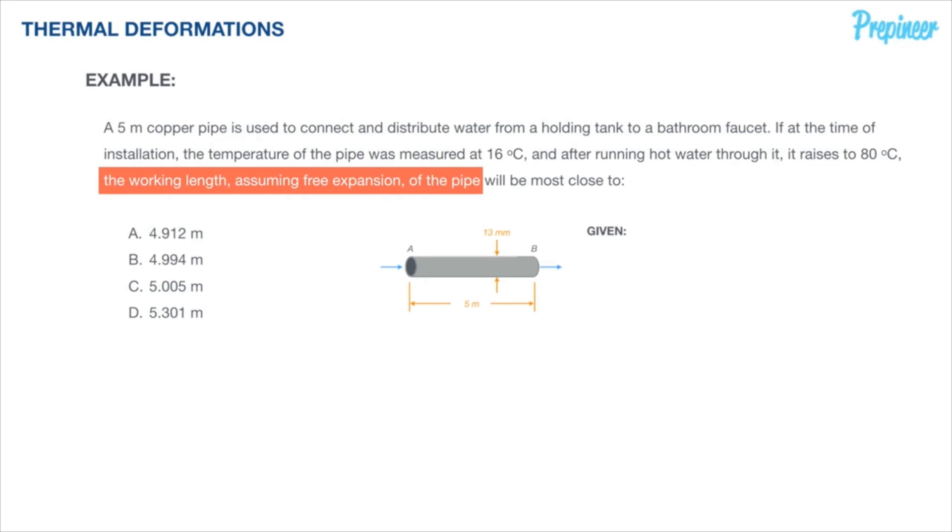Let's scratch out what we are given. We know that the length of our copper pipe is five meters originally. We know that the original temperature at the time of installation is 16 degrees Celsius.